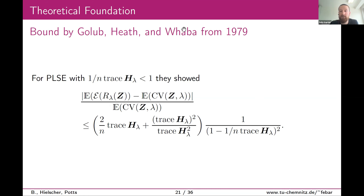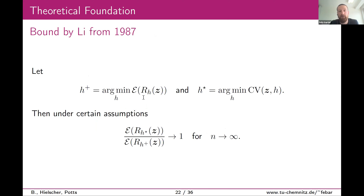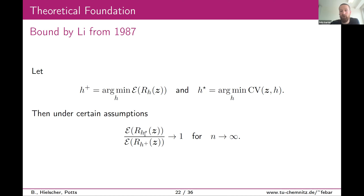Golub and Wahba circumvented the Bakushinskii veto by using expected values — they showed the expected value of the risk minus the expected value of the cross-validation score is bounded from above. Another approach was taken by Li in 1987: for H+ being the minimizer of the risk and H* the minimizer of the cross-validation score, he showed the ratio of these two quantities goes to one as the number of nodes goes to infinity — meaning both parameters perform equally in terms of reconstruction error. But we wanted a pre-asymptotic result holding with high probability.